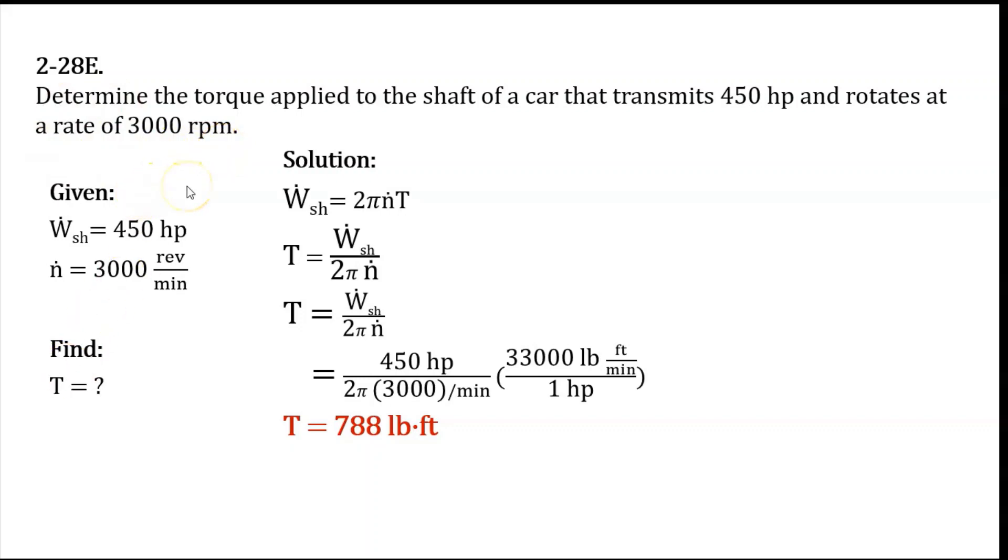In the problem, it is said that the engine of the car develops 450 horsepower at 3000 revolutions per minute. So the torque transmitted through the shaft is to be determined. First, let's identify the given in our problem.